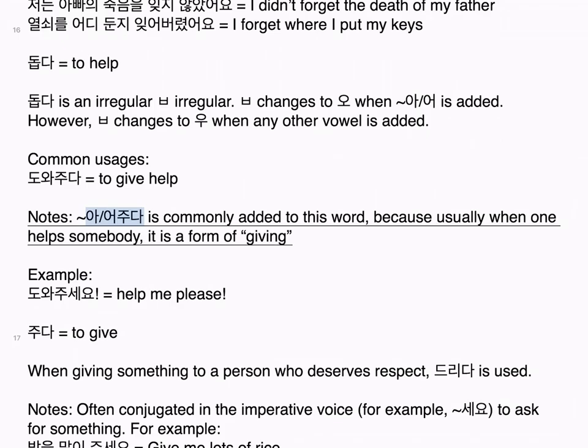돕다 means to help. 돕다 follows the 비읍 irregular — 비읍 changes to 오 when 아/어 is added, and changes to 오 when any other vowel is added. Common usages: 도와주다 means to give help. Notes: 아/어주다 is commonly added to this word because usually when one helps somebody, it is a form of giving. Example: 도와주세요. Help me please.